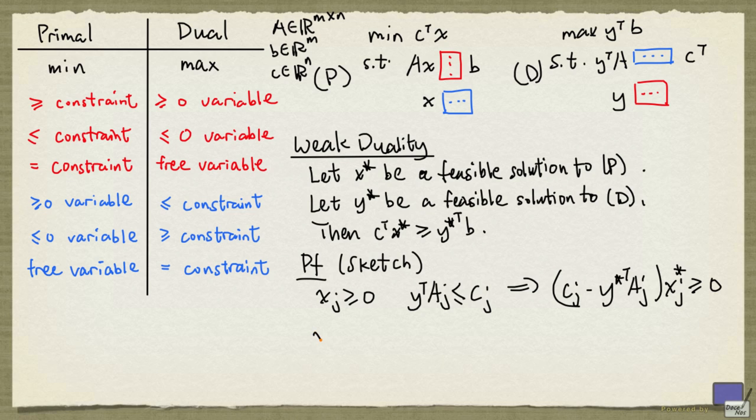And if the primal problem xj is constrained to be non-positive, then the corresponding dual constraint is a greater than or equal to inequality. And this implies once again that cj minus y star transpose a sub j times xj star is non-negative.